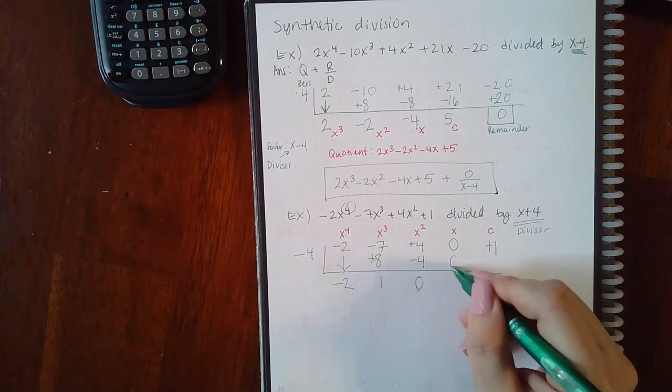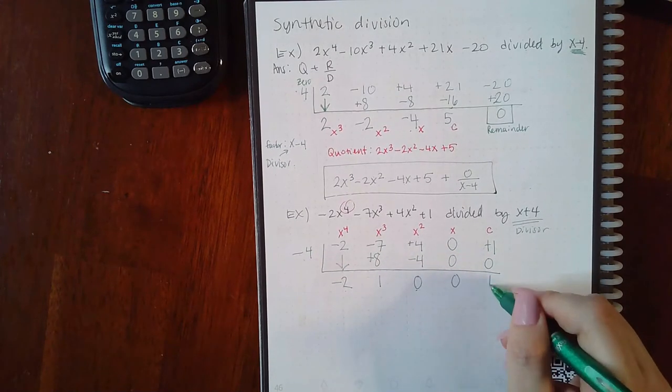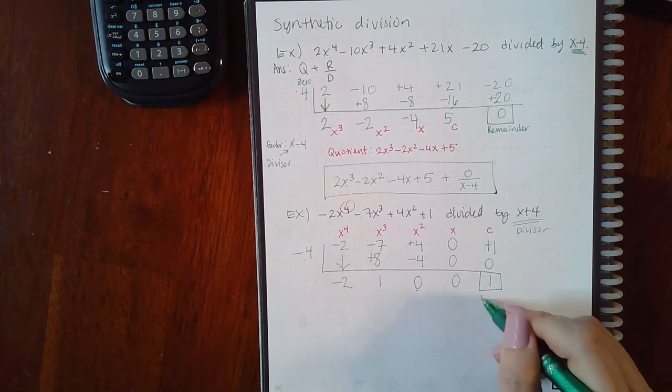Negative 4 times 0 is 0. 0 and 0 is 0. Negative 4 times 0 is 0, and here I get 1. This is my remainder.